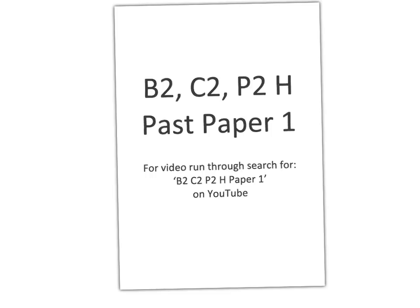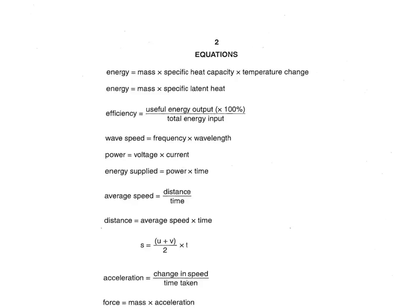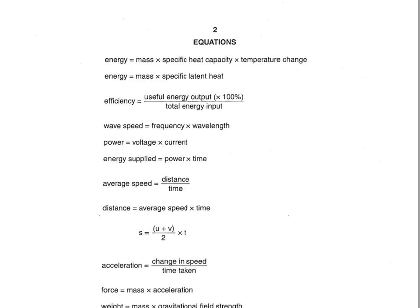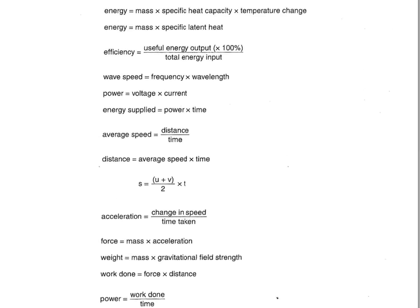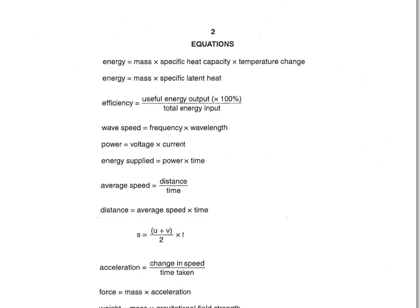This is the B2C2P2 Higher Pass Paper 1 run-through. Remember, you have all these equations at the front of your paper. Use them when you're doing calculations for your questions.